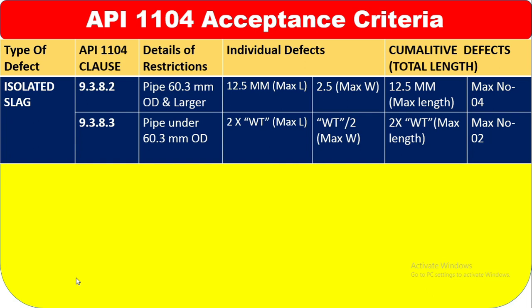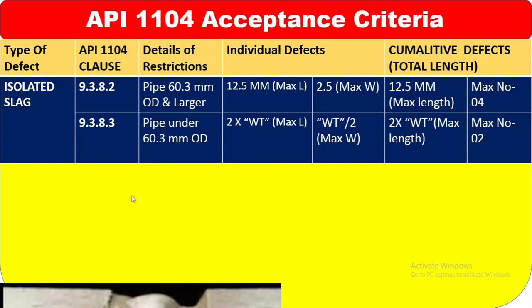For cumulative defects in isolated slag under 60.3 mm OD, the maximum length is 2 times wall thickness and maximum number is 4. Meaning if isolated slag count exceeds 4, it is not acceptable. Maximum number 4 is okay, but more than 4 is not acceptable. You can see isolated slag and elongated slag acceptance criteria here.